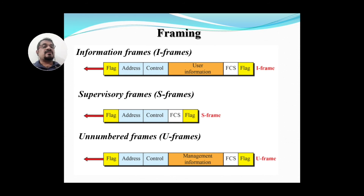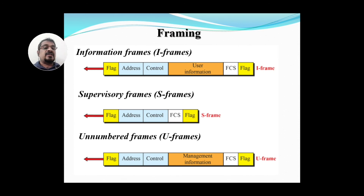All frames start with a flag and end with the same flag. Address fields, control fields, and FCS — Frame Check Sequence — fields are common for all three frames, whether I-frame, S-frame, or U-frame. The difference is in the control field bit pattern. I-frames contain user information, S-frames have only overhead fields, and Unnumbered frames carry management information.